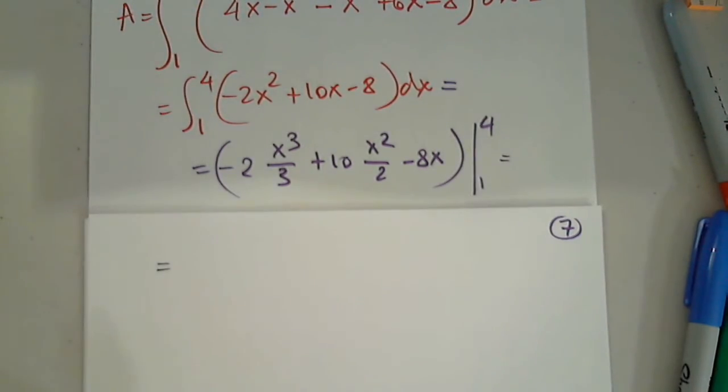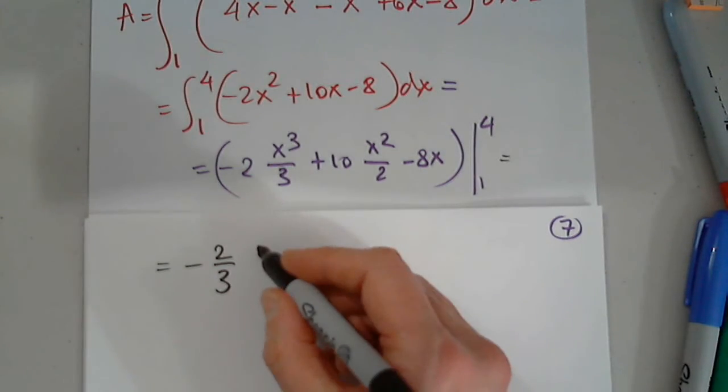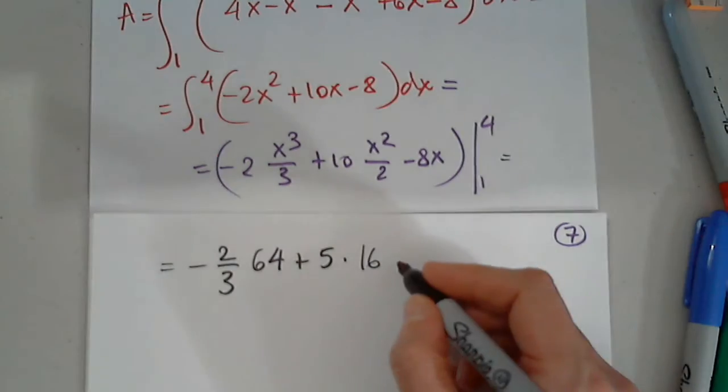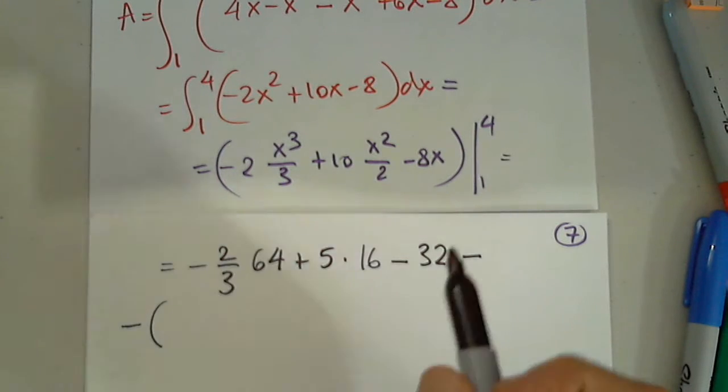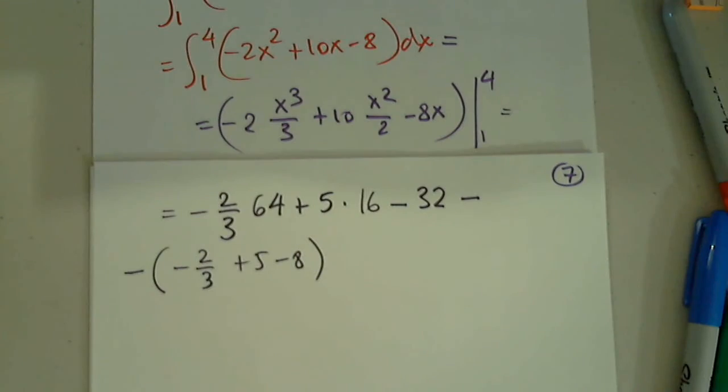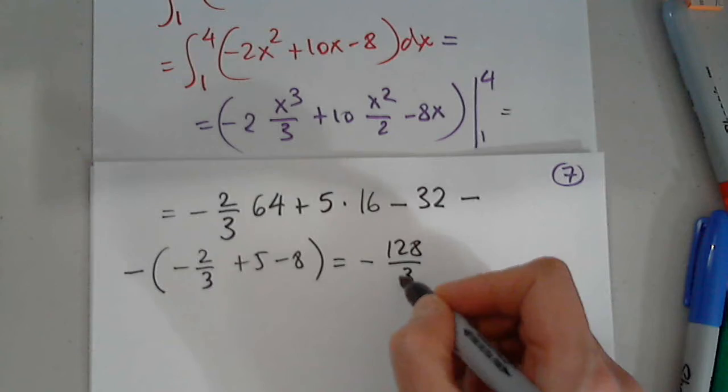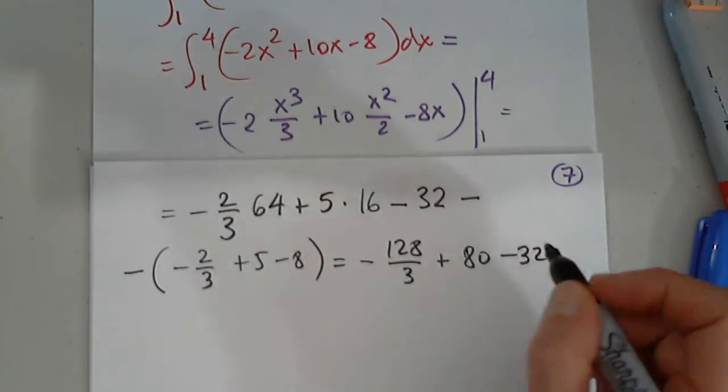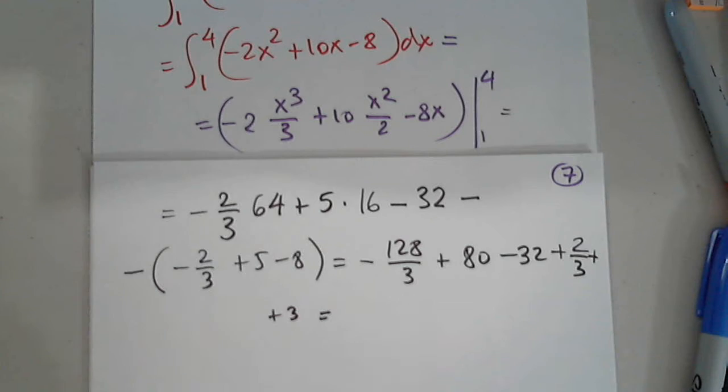So I'm assuming you will let me know if you have anything. So negative 2 thirds. I plug in 4. 4 times 4 is 16. 16 times 4 is 64, plus 10 divided by 2, 5, times 4 squared, 16, minus 32, minus, I plug in 1, parentheses. When I plug in 1, negative 2 thirds and plus 5 and minus 8. So negative 128 over 3, plus I think this is 80. Yes. Minus 32. Now this is positive 2 thirds. And this is negative 3 with minus in front plus 3.